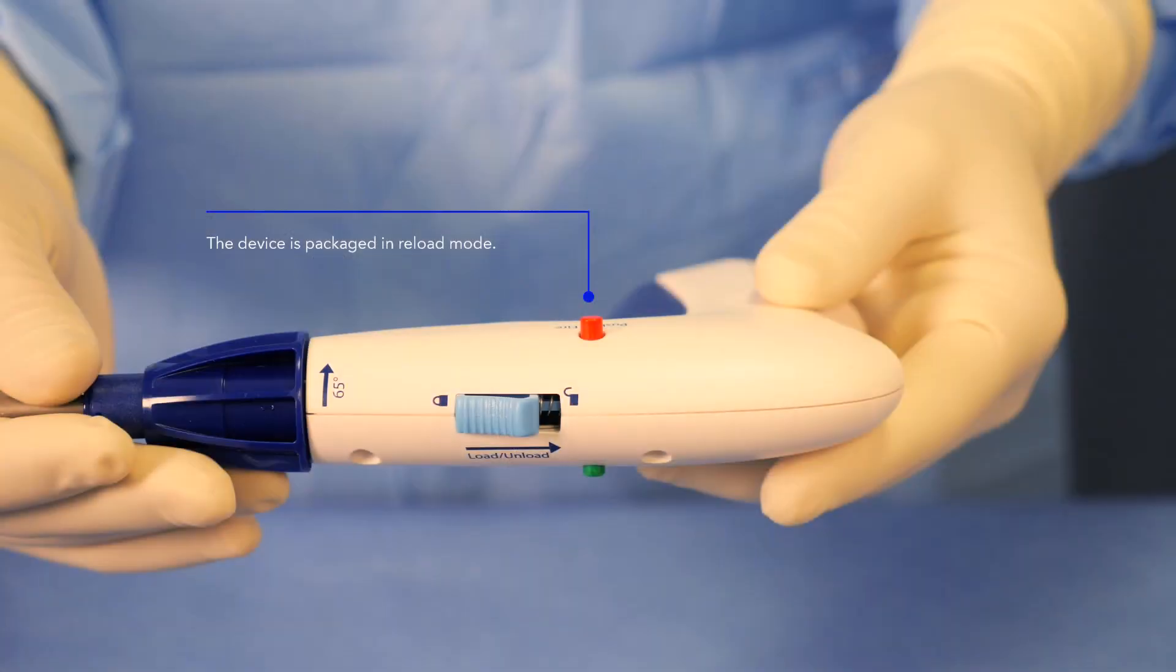The device will be packaged in reload mode. Notice the red toggle button is exposed. This indicates that the device is in the straight, unarticulated position.